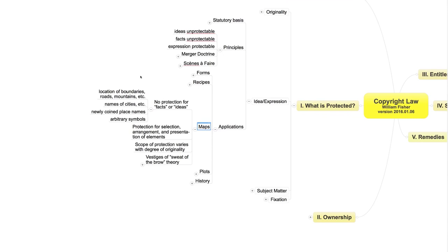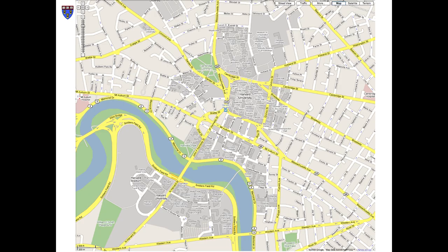Latent in that rationale is the seed of a much more general principle that will flower in subsequent lectures. So what aspects of maps do enjoy copyright protection? The answer is original selection, arrangement, or presentation of individually unprotected elements. The net effect is that entirely conventional maps receive no protection whatsoever. Consider, for example, this screenshot of a map created by Google of the sector of Cambridge, Massachusetts that includes Harvard University. If I copy it without permission, as I've done for the purpose of this slide, have I engaged in copyright infringement?